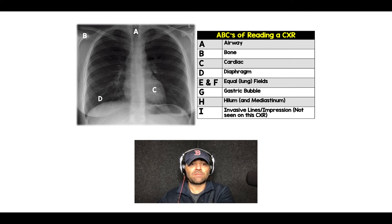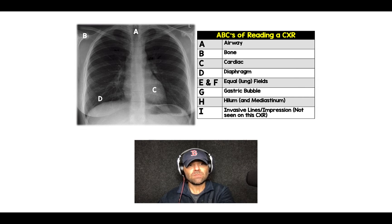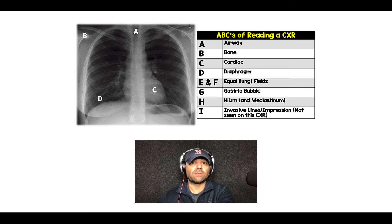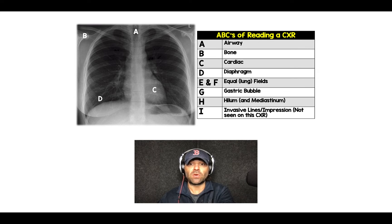D is for diaphragms. Typically the right hemidiaphragm is higher than the left hemidiaphragm because of the liver that sits underneath it. You want to make sure there's not a deep sulcus sign concerning for a pneumothorax, or air underneath the diaphragm, which is concerning for an abdominal perforation.